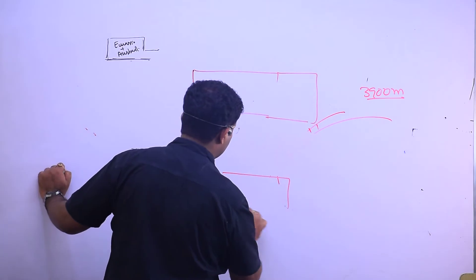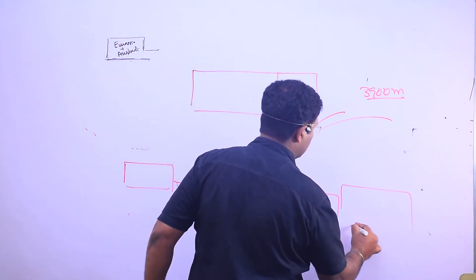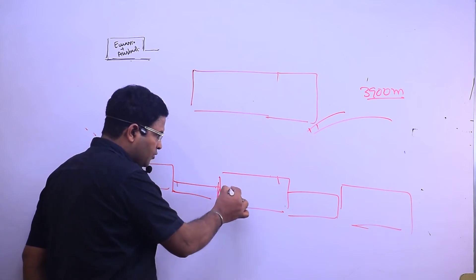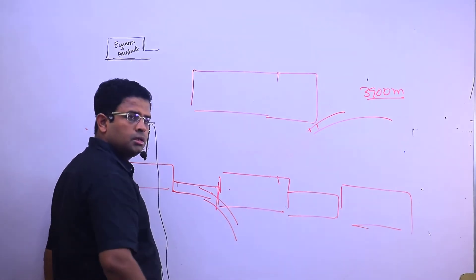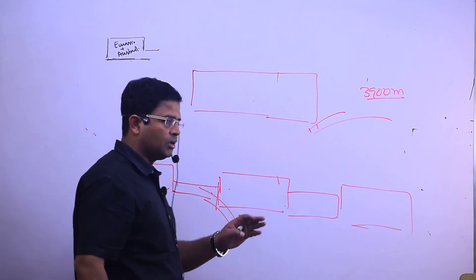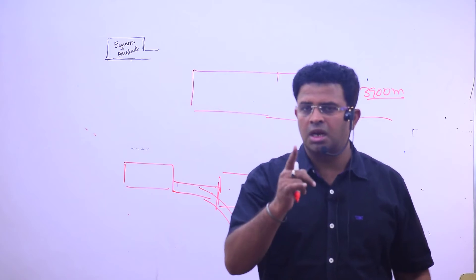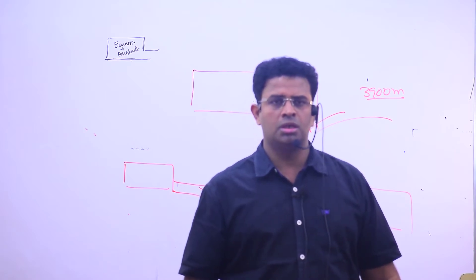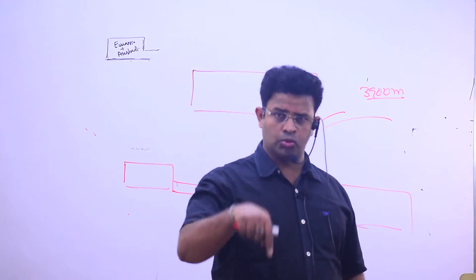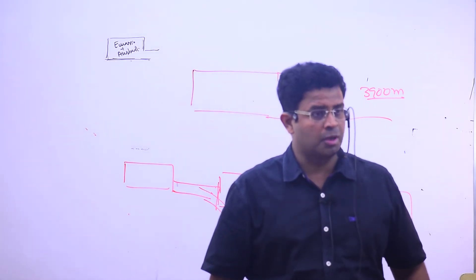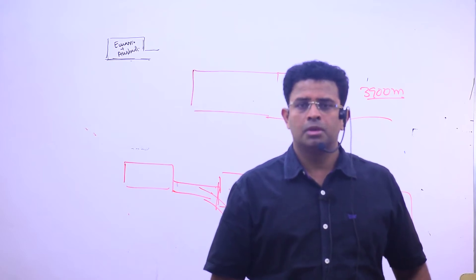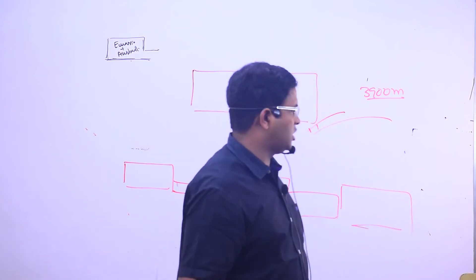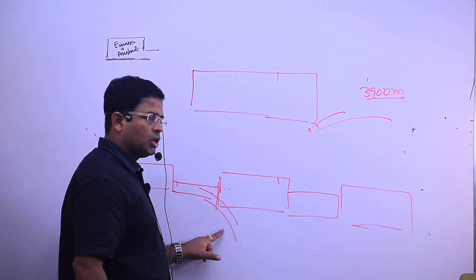Draw a figure showing how the continent and ocean were existing earlier, but convergence causes ocean floor at the margin of the continent to start subducting. It started happening 3,900 million years ago. The three forces responsible for plate movement are: convectional current of magma, slab pull, and ridge push.